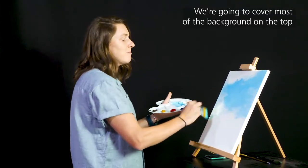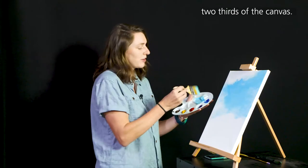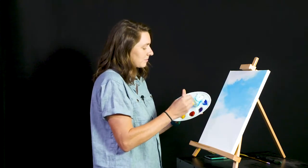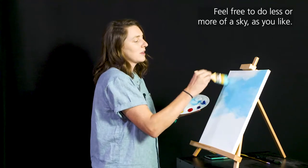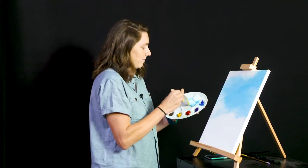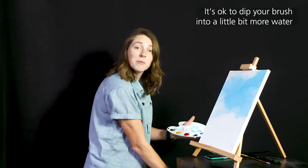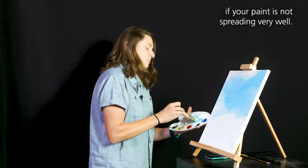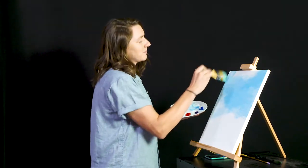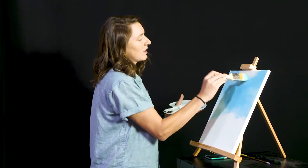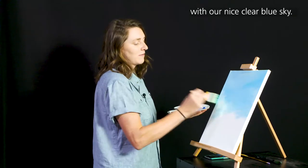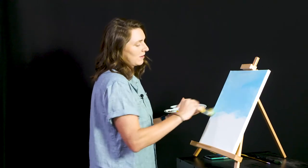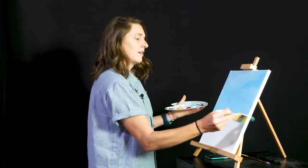We're going to cover most of the background on the top two-thirds of the canvas. Feel free to do less or more of a sky as you'd like. It's okay to dip your brush in a little bit more water if your paint is not spreading very well. Just going to cover the whole background here with our nice clear blue sky. It can look a little messy at this point. That's okay.